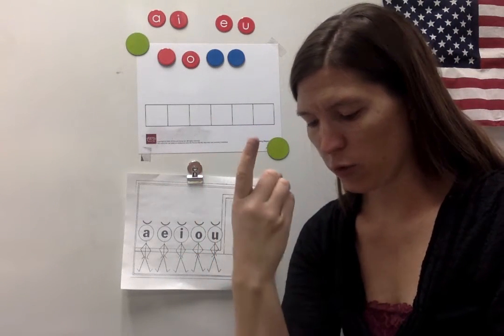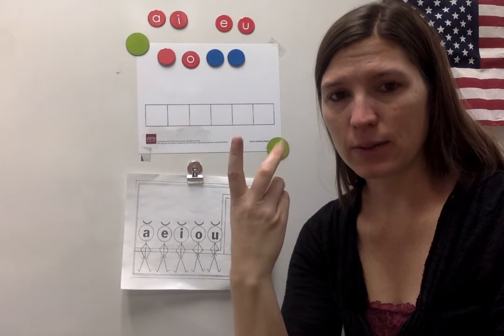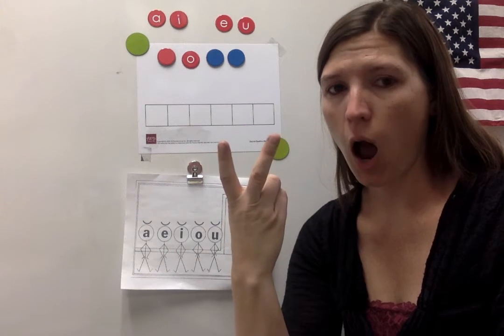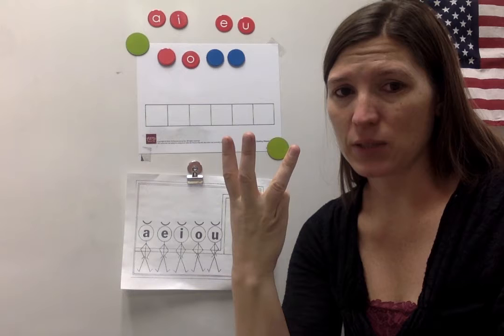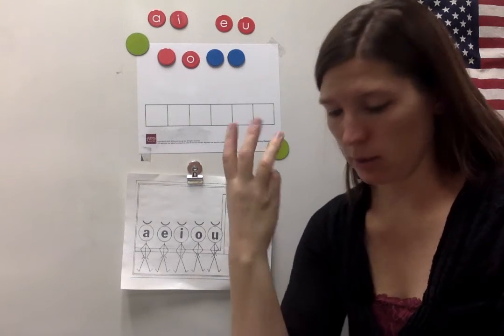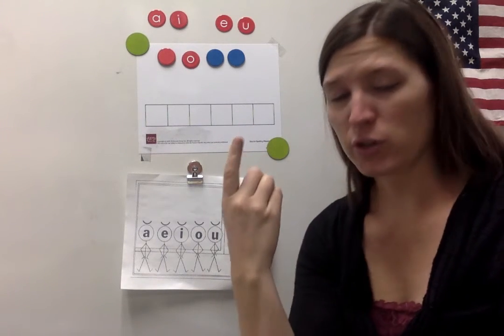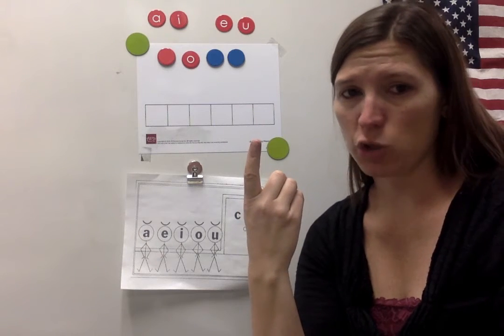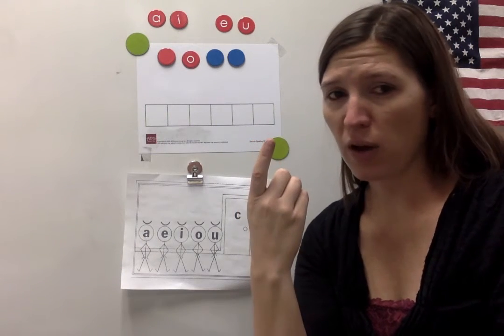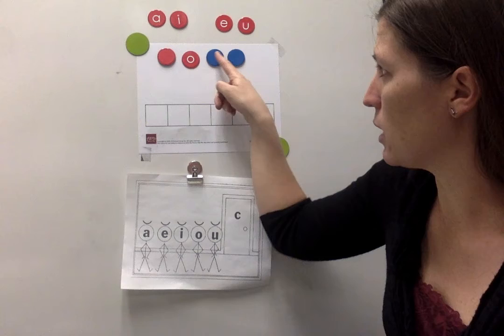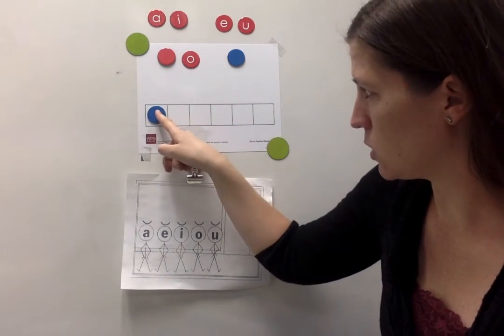What's my first sound? N. What's my vowel sound? AH. What's my last sound? D. N-O-D. My first sound is N. What color chip do I need? It's not a vowel. It's a consonant. So I need a blue consonant sound chip.